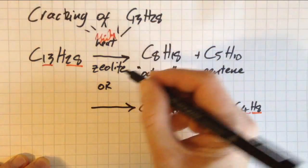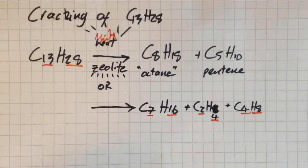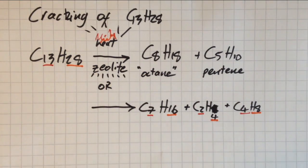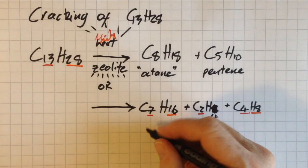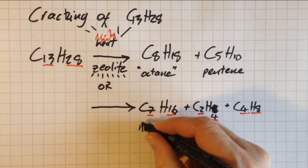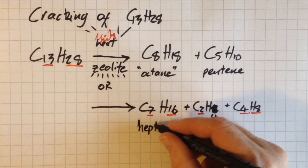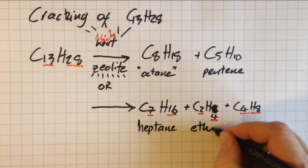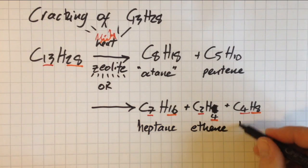Lovely, and so by changing the heat and the zeolite composition, you can have whatever cracking you want. So for the final case, I made heptane, ethene, and that looks like a butene.